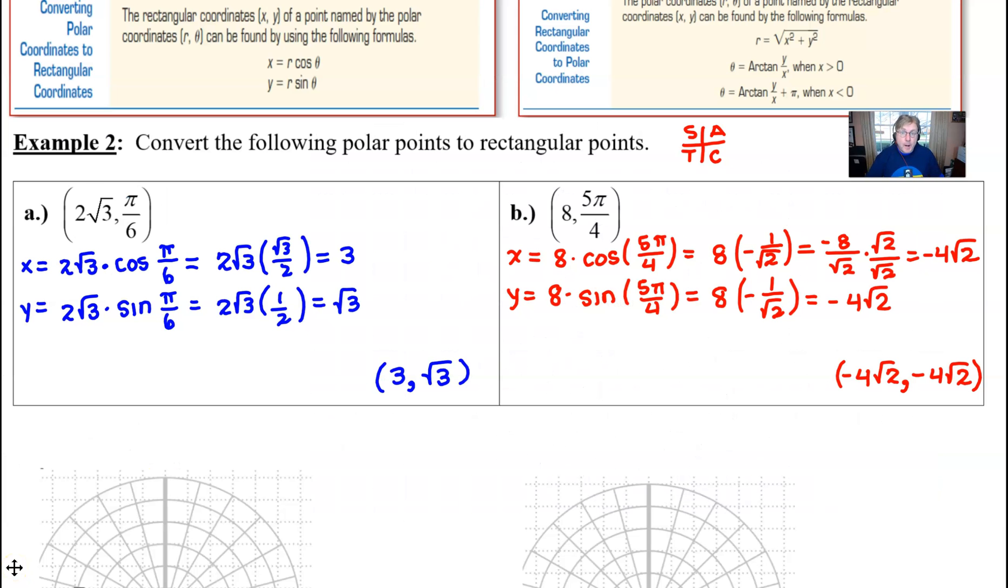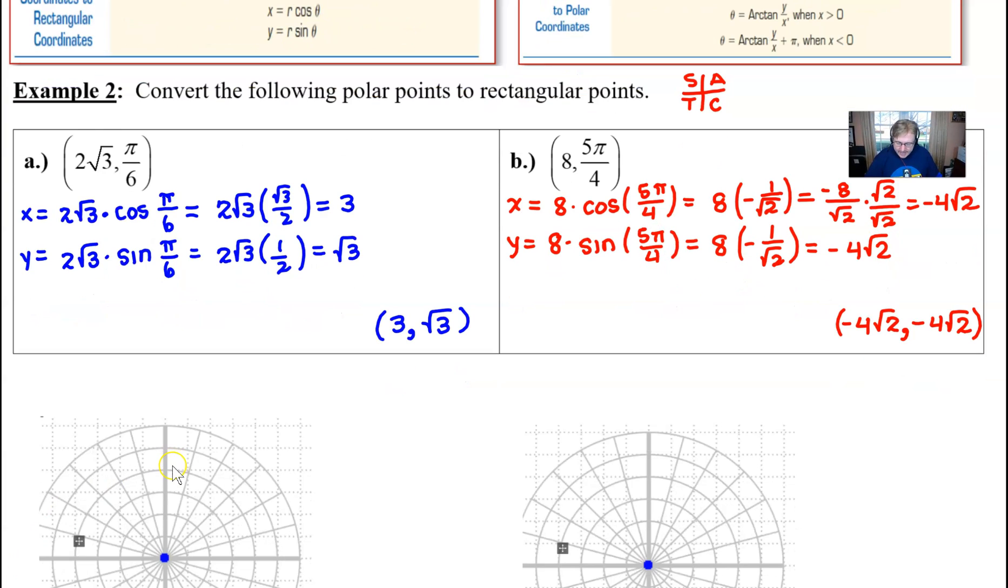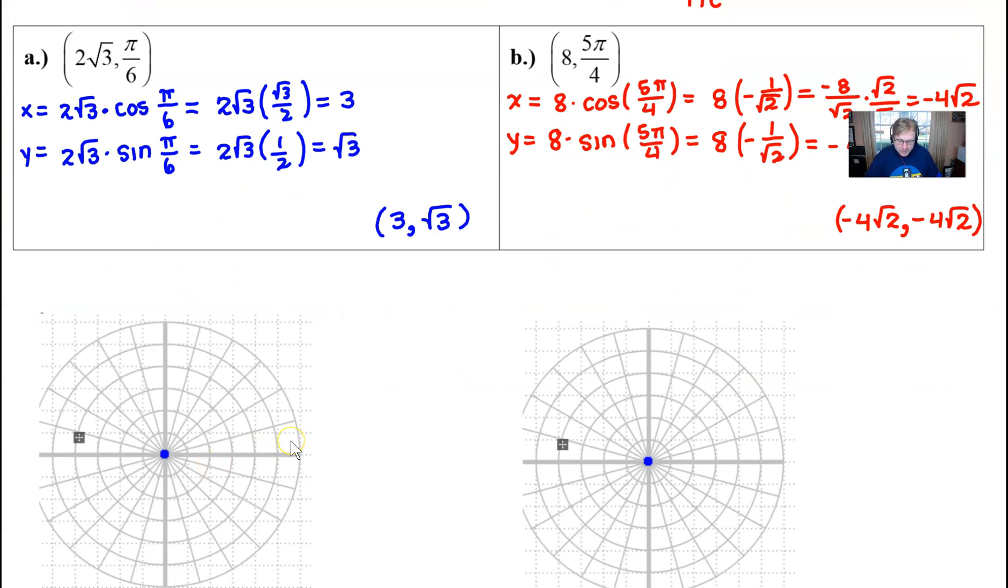So here we are back to our problem and I'm going to go ahead and superimpose these graphs down below and what I'm going to do is in blue I'm going to try as best I can to locate this polar coordinate point 2√3, π/6. Well I know that my π/6 would take me this far over as an angle measure.